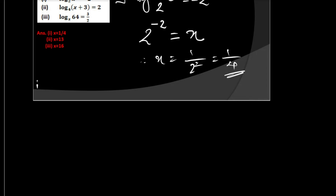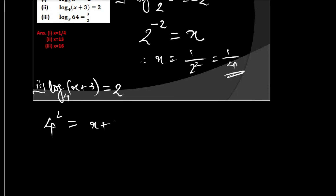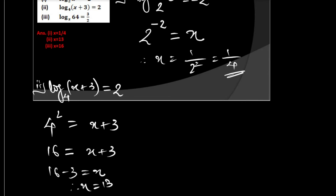Question 2: log of (x + 3) to the base 4 is equal to 2. Converting to exponential form: 4 raised to 2 equals x + 3. So 16 equals x + 3, giving x equals 13.